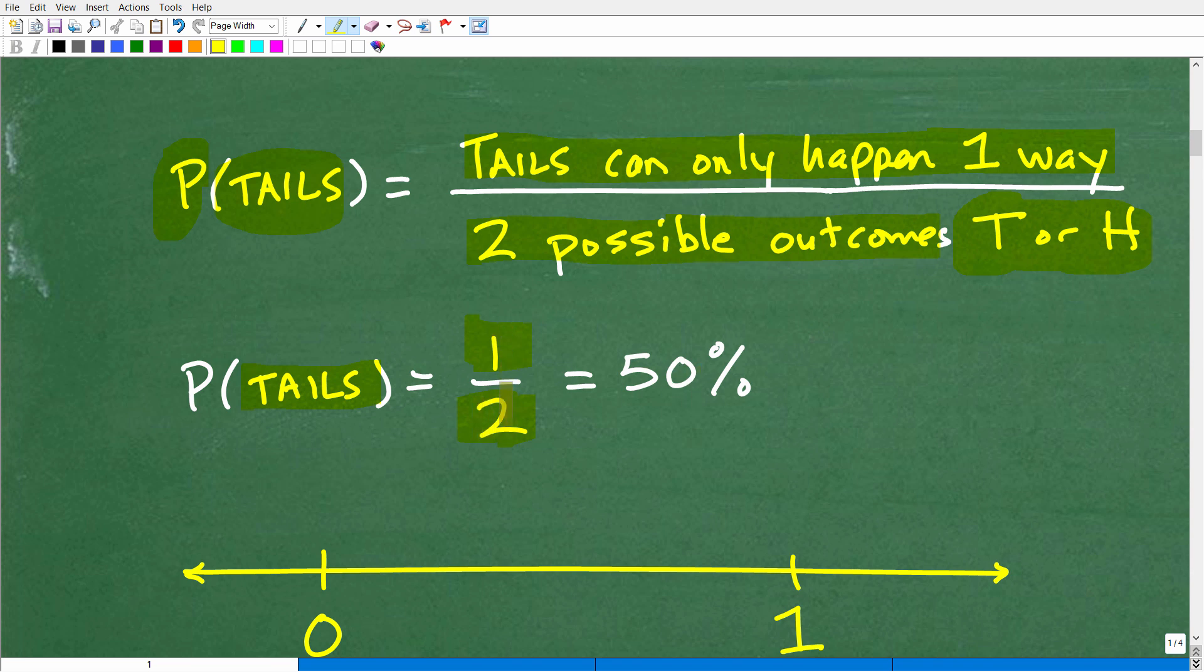So, the probability of getting tails is one half. Now, we can express this one half as a percentage, and we typically do that with probability. So, the probability, again, of getting tails on flipping a quarter is one half or 50%. So, typically, most people will say, oh, you got a 50-50 chance. Again, we're using this word chance, right? And we're talking about probability.